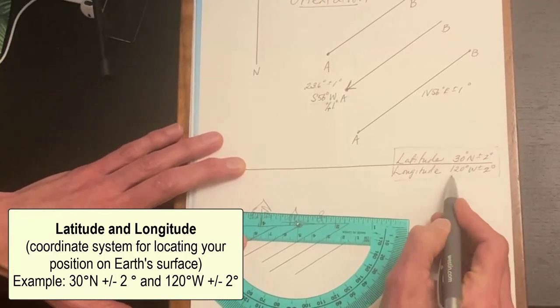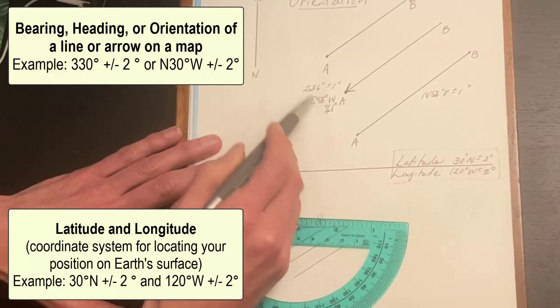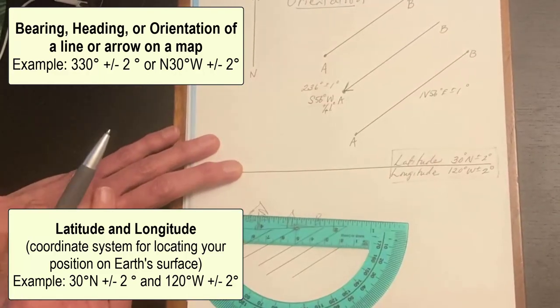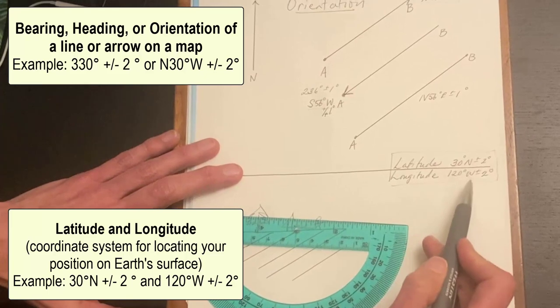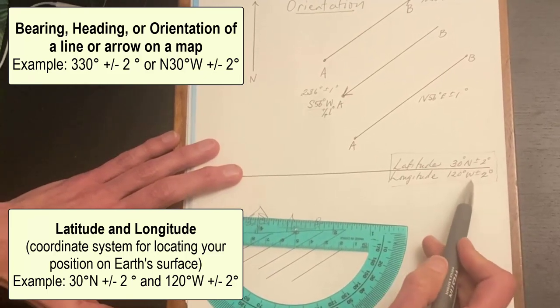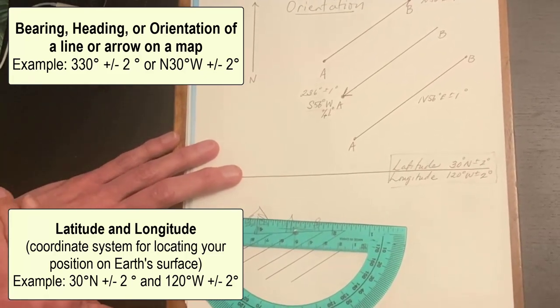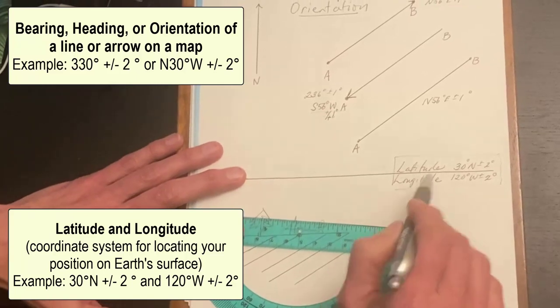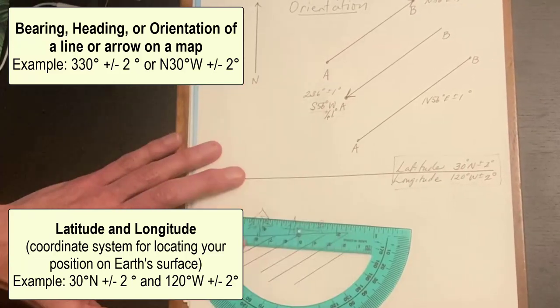Notice the different format it does not match the format at all of an orientation that makes it much easier. We should be able to recognize latitude and longitude when we see it because of those letters with the numbers and recognize it's a completely different beast. Coordinate system and orientation of a line.